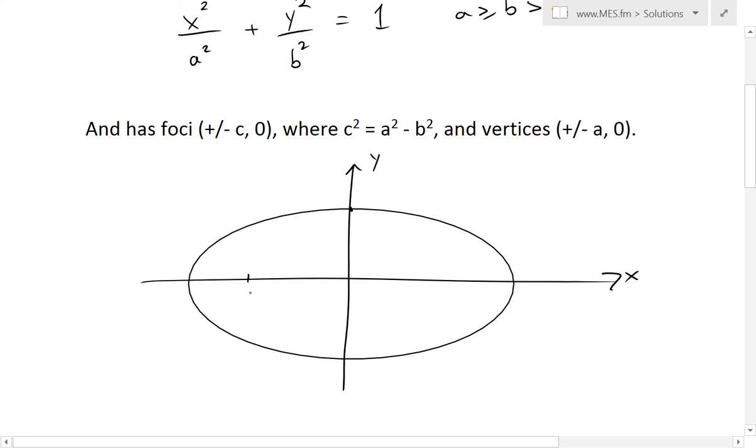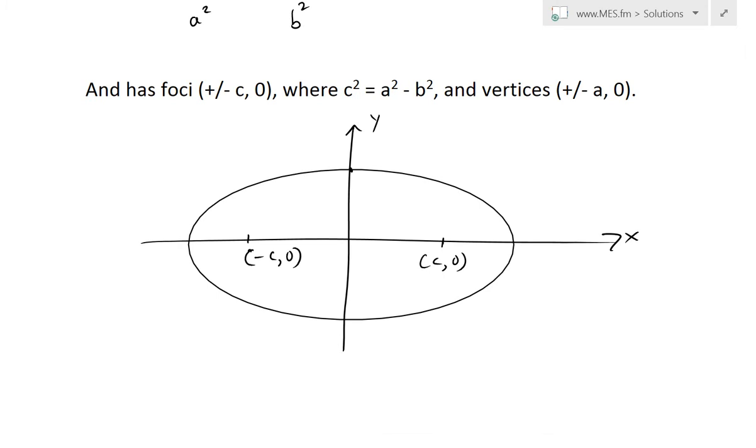So at this point right here is negative c and 0, then at here is c and 0. So the combination distance from any point to both these foci is constant, so make sure to watch my earlier video on that.